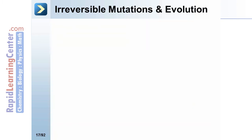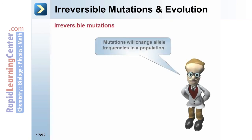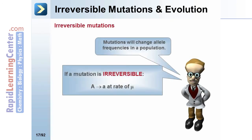Mutations will change allele frequencies in a population. If a mutation is irreversible, the uppercase A allele will go to lowercase a at a rate of u, but will not be able to go back — this is an irreversible mutation.